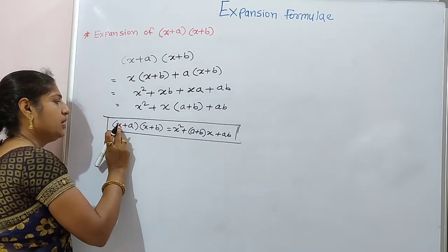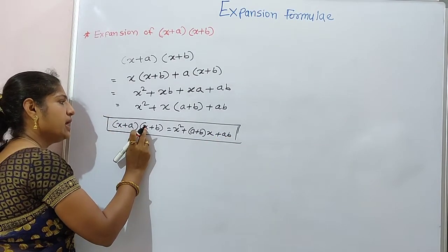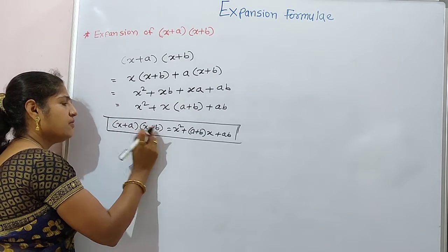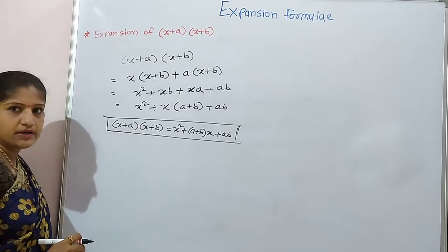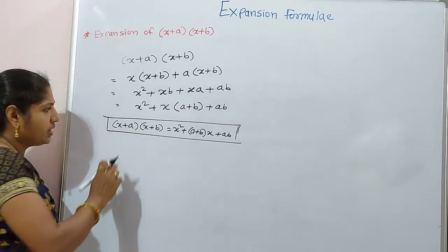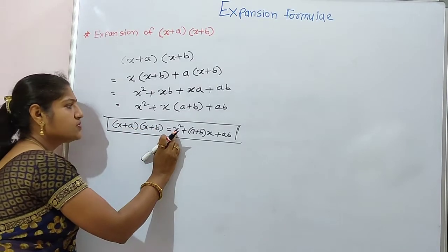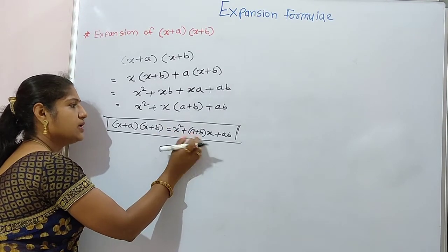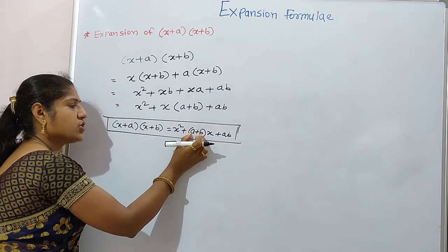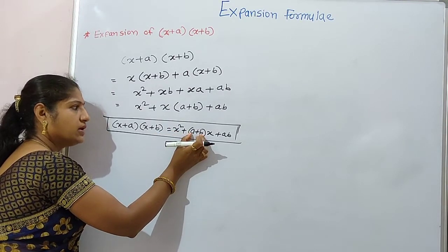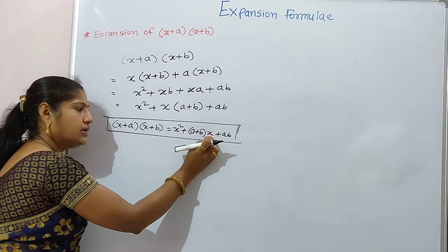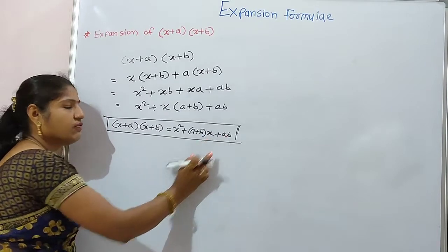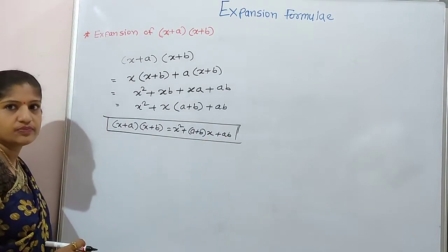Here, x and x are like terms, and a and b are unlike terms. So the formula is: like term squared, plus summation of unlike terms multiplied by the like term, plus the multiplication of unlike terms.